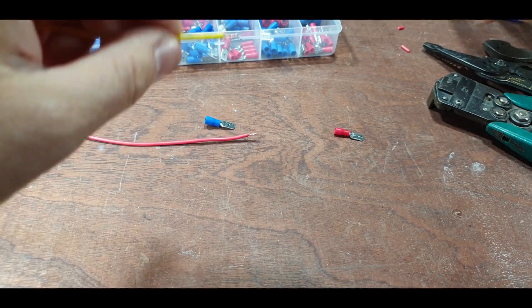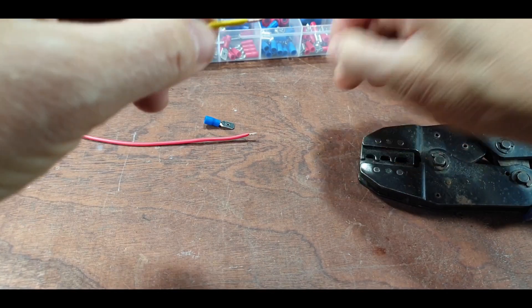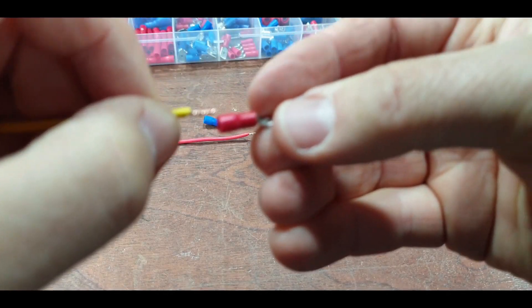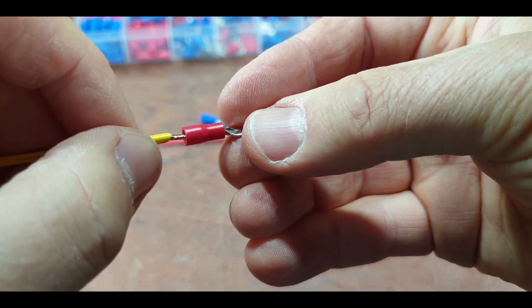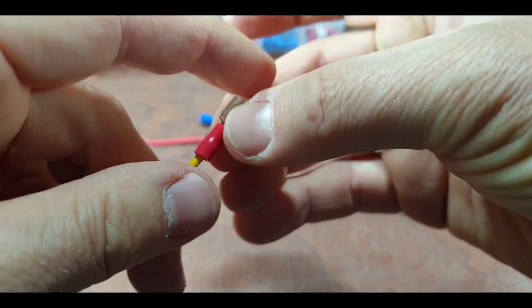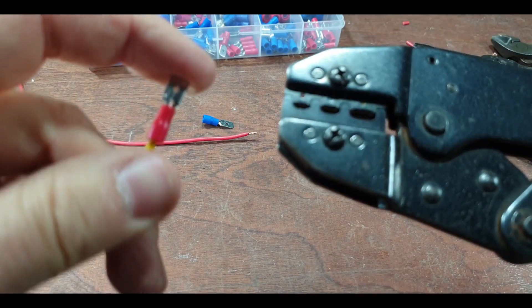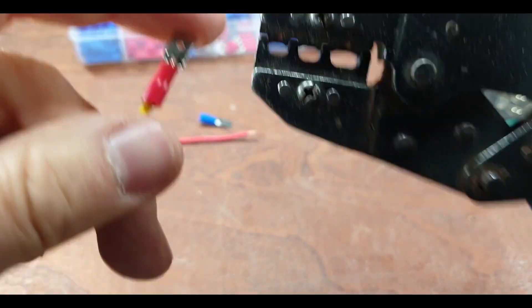I'll show you the difference using the crimpers makes. Again, you just put a connector in, select the red boss.